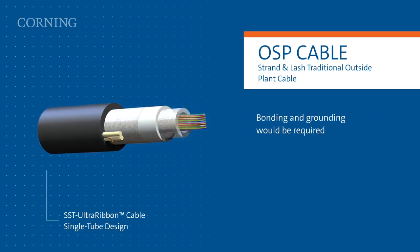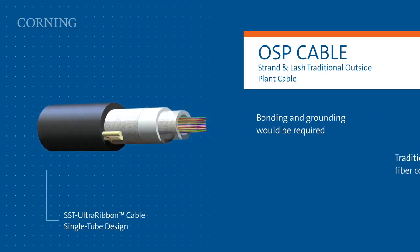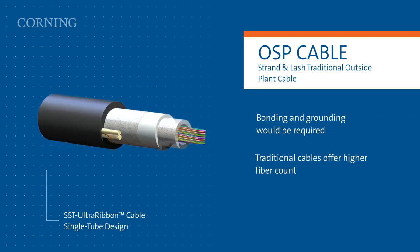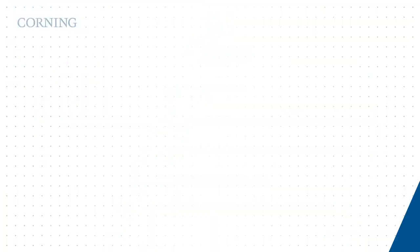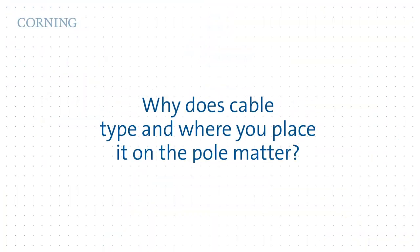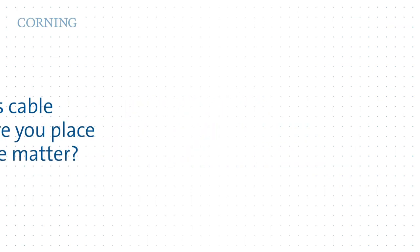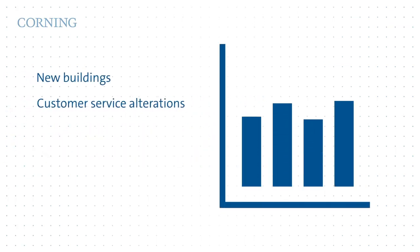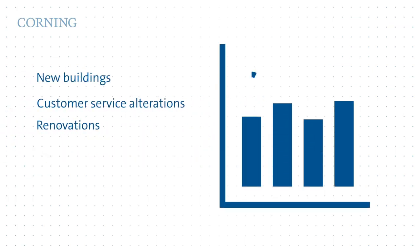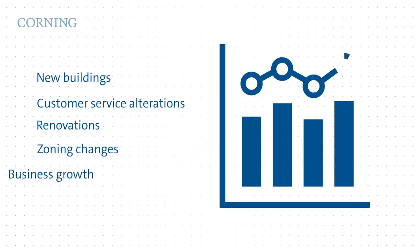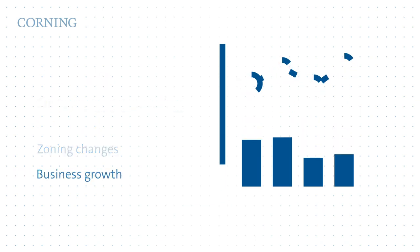Traditional cables offer higher fiber count options than ADSS cables, particularly if ribbon cable is considered. Why does cable type and where you place it on the pole matter? Broadband needs are frequently in a state of change, with new buildings, customer service alterations, renovations, zoning changes, and business growth creating the need for flexible fiber cable facilities.